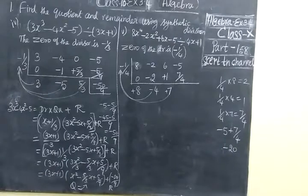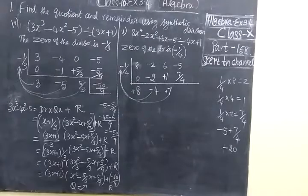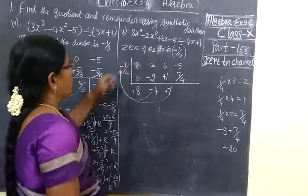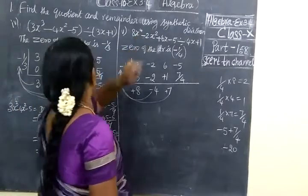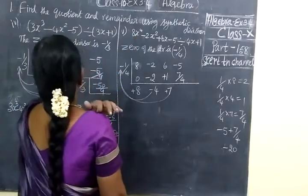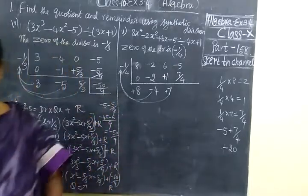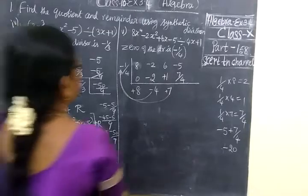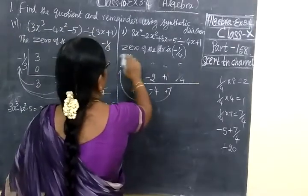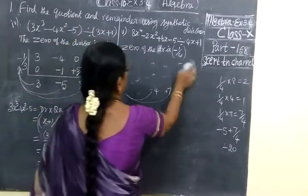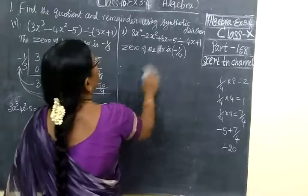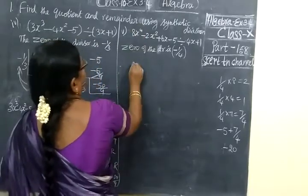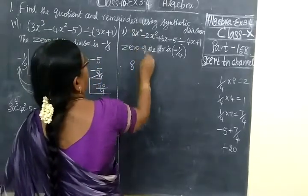Here we check the answers. Here is minus 2. Now this is not in x power 4 — after that x cube we must have. So this is not in standard form. We repeat here. x power 4, then x cube — no x cube, so we write 0.